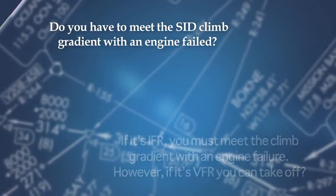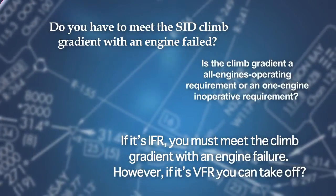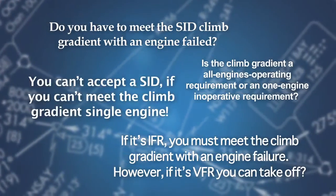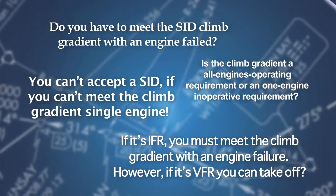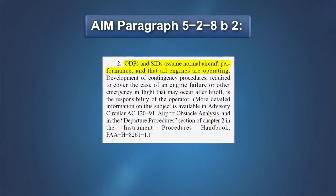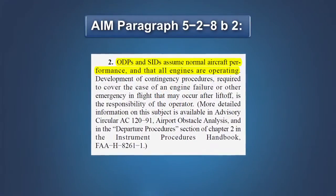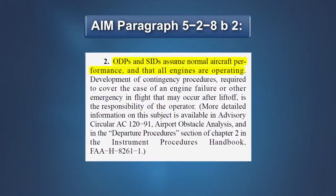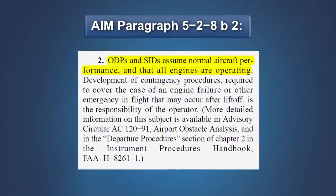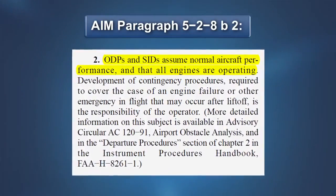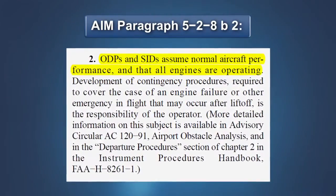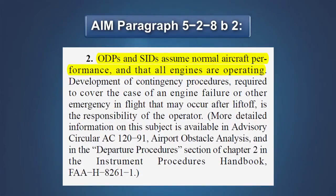Over the years, pilots have asked many questions concerning the climb gradients published on SIDs and obstacle departure procedures. Let's answer the most important question first: all IFR departure procedures are based on normal airplane operation and assume that all engines are operating. Compliance with the climb gradient published on a SID or ODP is based on the normal all-engines-operating climb performance of the airplane. There is no requirement to demonstrate compliance with a SID or ODP based on one-engine-inoperative performance. If an engine fails on takeoff in a transport category airplane, the operating rules and procedures previously discussed are used to address that failure. The IFR departure procedure is no longer applicable.